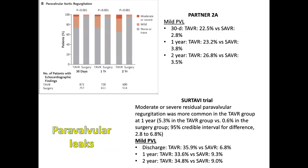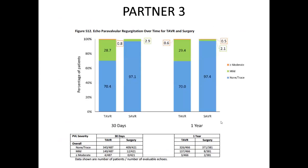Across all intermediate-risk trials, the percentage of mild PVL remains 20-30% in TAVR — a little more in the CoreValve cohort. In the PARTNER 3 trial, there is at least 30% mild PVL at 30 days and one year. This will add consequences over time.